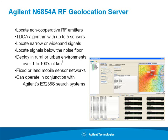We can locate narrow or wideband signals, and even signals below the noise floor. The algorithms are appropriate for a sensor network deployed in rural or high-multipath urban environments over an area of a square kilometer to hundreds of square kilometers. They also support fixed or land-mobile sensor networks, and can operate in conjunction with the Agilent E3238S search system.